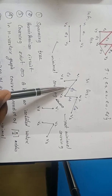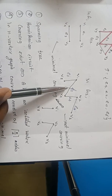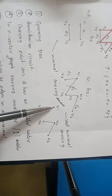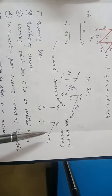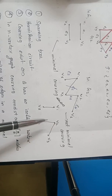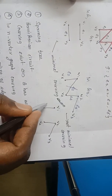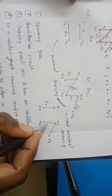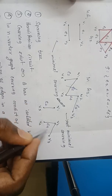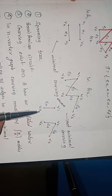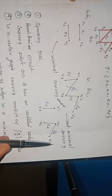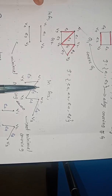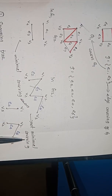Even after removing the edge E5, all the vertices of G2 are included by the remaining edges E2, E4, E6. So I can say that this G is not a minimal covering.